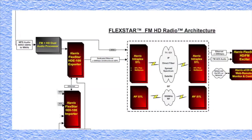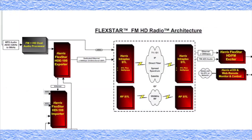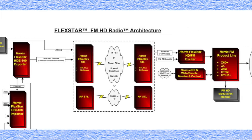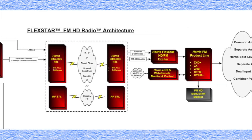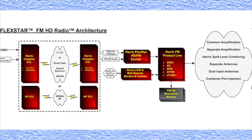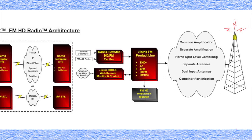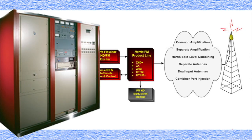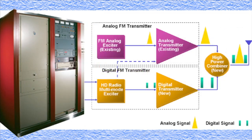In radio, IP plays a big part of IBOC, or in-band on-channel digital radio, or HD radio as it's called now. The digital audio and data for broadcasting is sent to the IBOC transmitter in IP format, making it easy to use standard network infrastructure and equipment.